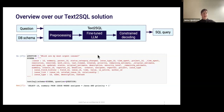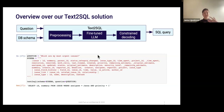Specifically we have three components: a preprocessing component, a language model which we fine-tune to the text to SQL task, and constraint decoding to ensure our SQL queries are valid. I'll kind of jump over the preprocessing component — preprocessing is the fundamental basis of everything in NLP, but it's highly subjective and individual. Things that work for us in this specific case will probably not work for many other cases, so I won't bore you with those details.